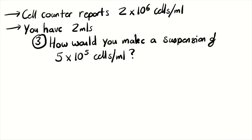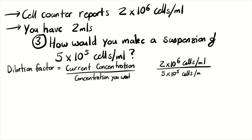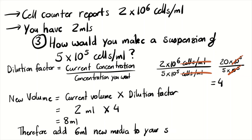The final question asked: how would you make a suspension of 5 × 10⁵ cells per mil? First, calculate the dilution factor: current concentration 2 × 10⁶ (or 20 × 10⁵) divided by 5 × 10⁵ cells per mil — the 10⁵ terms cancel, leaving 20 ÷ 5 = 4. Dilution factor is 4. Next, new volume = current volume × dilution factor: 2 mils × 4 = 8 mils. You already have 2 mils, so add 6 mils of new media to reach the desired concentration.